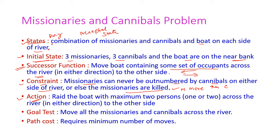The action is to ride the boat with a maximum of two persons — the boat can contain one or two persons crossing the river in either direction. The goal test is to move all missionaries and cannibals across the river. The path cost requires the minimum number of moves, with a cost of one for each move.